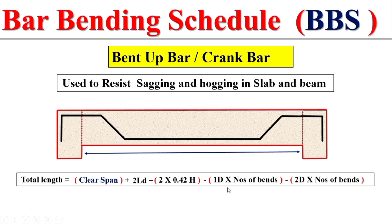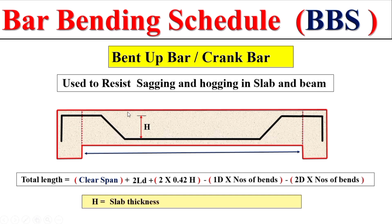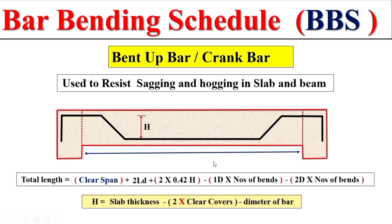The value of h in the formula is the height from the center of the bar on one side to the center of the bar on the other side. To find this height, we take the total slab thickness, subtract the clear cover on both sides, and subtract one full diameter (half diameter on each side). Substituting all these values into the formula gives us the total length of the bend-up or crane bar.